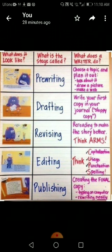Once you are prepared or done with a picture or a web, then comes the second stage, which is drafting. Write your first copy in your journal or sloppy copy. It means that whatever ideas are there in your mind for your creative topic, you have to write them on a rough paper, roughly.